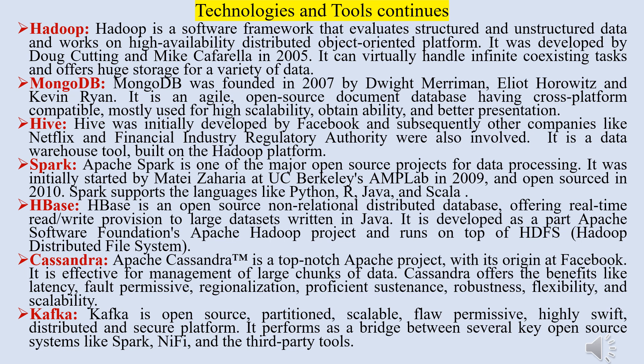MongoDB was founded in 2007 by Duet Merriman, Elliot Horowitz and Kevin Rayon. It is an agile, open-source document database with cross-platform compatibility, mostly used for high scalability, availability and better performance. Hive was initially developed by Facebook and subsequently other companies like Netflix and the Financial Industry Regulatory Authority were also involved. It is a data warehouse tool built on the Hadoop platform.